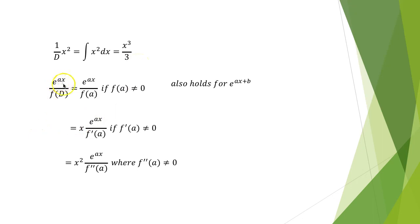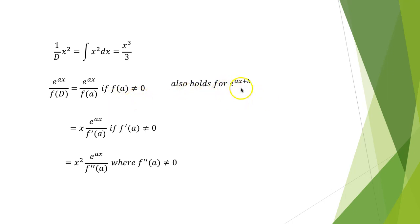Now, e^(ax) / f(D) equals e^(ax) / f(a), provided f(a) ≠ 0. The same formula holds for e^(ax+b).